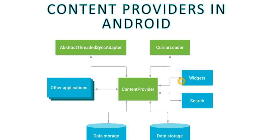Content provider presents data to external applications as one or more tables, similar to tables found in a relational database. The data is stored in the form of database tables with rows and columns. This was an overall picture — data is stored here and other applications can access that particular content provider.